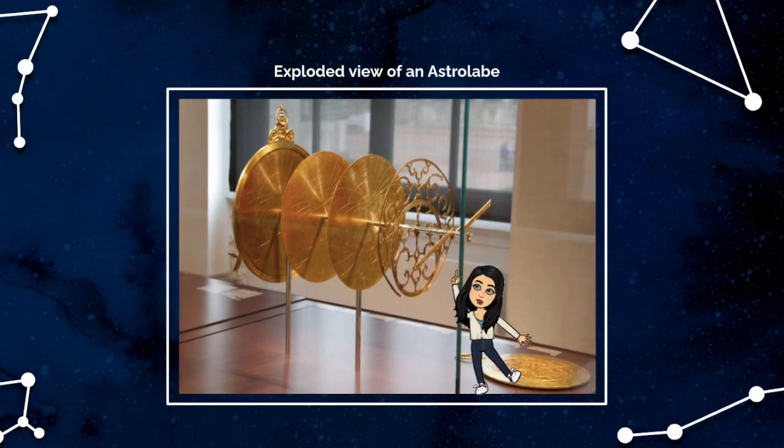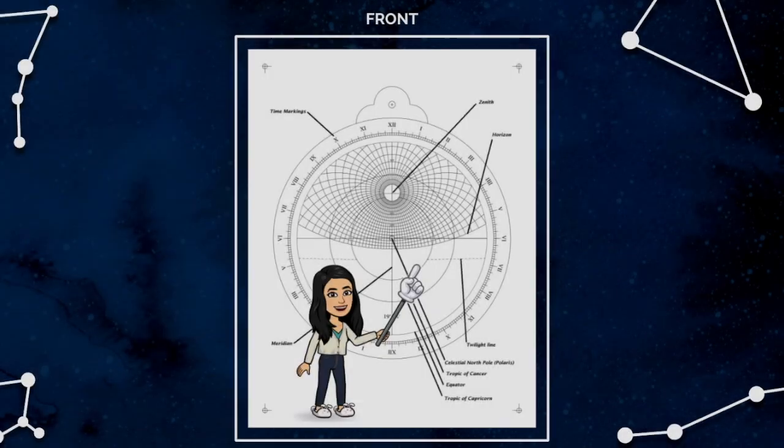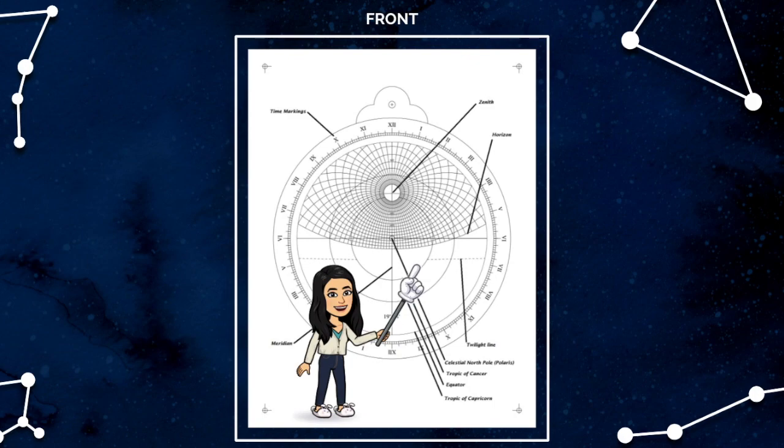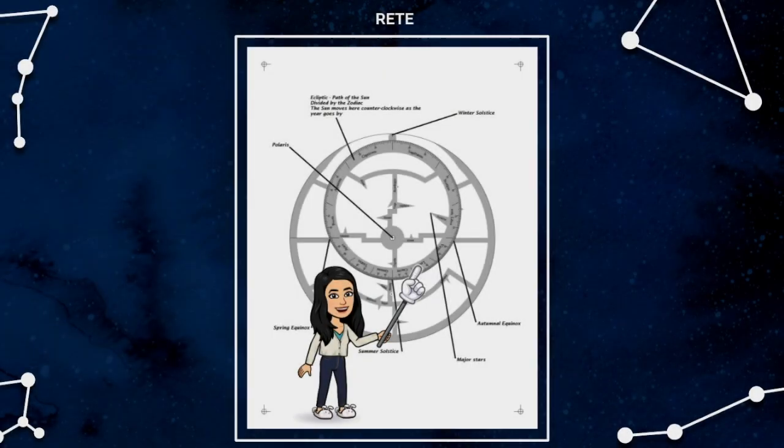The plate's circumference has the time markings and the directions go as south, west, north and east. The dotted line is the twilight line. In the center lies the celestial north pole. And the circular lines telling the altitude are called the almucantars. Between two lines of almucantar is the projection separation of 5 degrees and the horizontal lines are the azimuth lines.